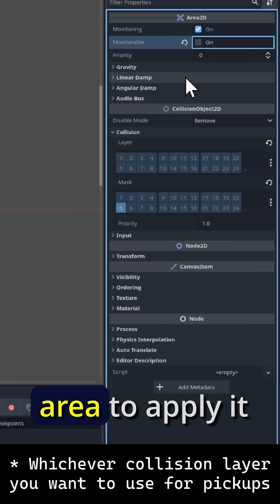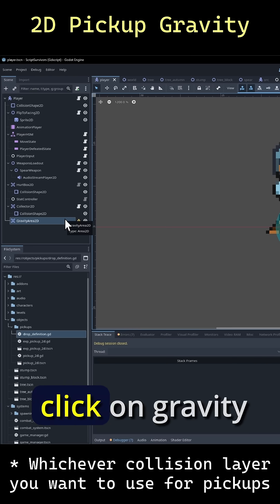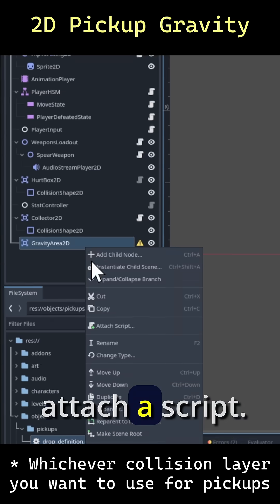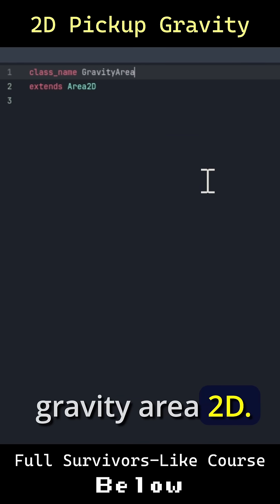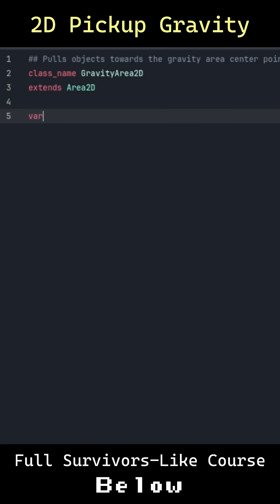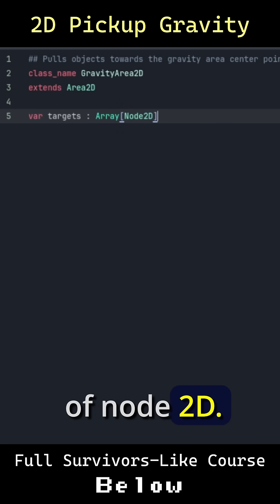Then we just need in the gravity area to apply it to all objects inside of here that it detects. So I'll right click on gravity area 2D and attach a script, class name of course GravityArea2D. Let's have a local variable, I'll call it targets and this will be an array of Node2D.